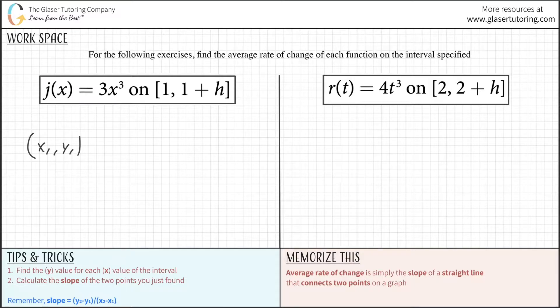We need an x1 and y1, and an x2 and y2. If we can find two pairs of points, we can plug them into our slope formula to find the slope, aka the average rate of change.